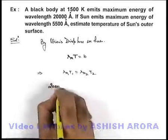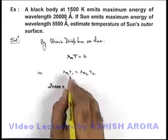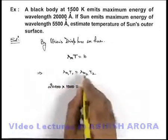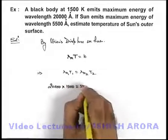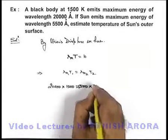20000 angstrom multiplied by the temperature of the body, which is 1500 Kelvin, is equal to the wavelength for Sun as 5500 angstrom multiplied by its temperature T2.